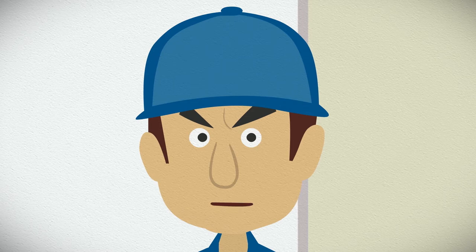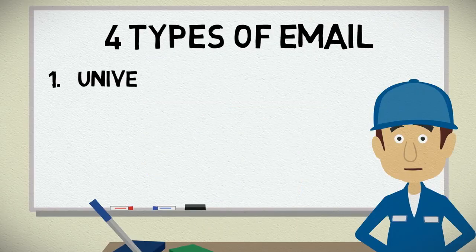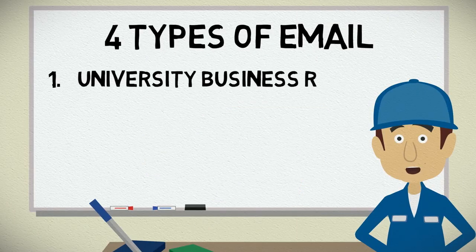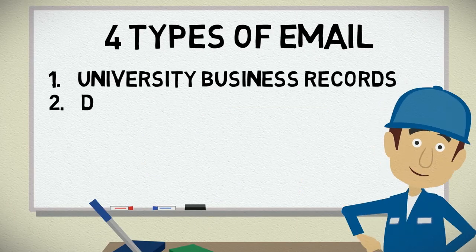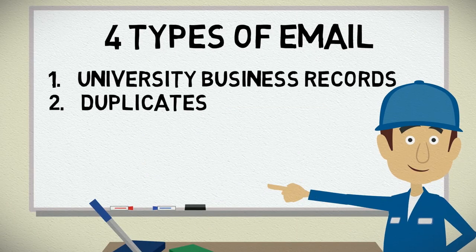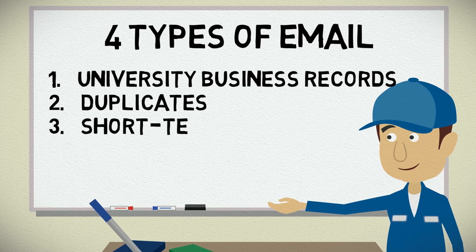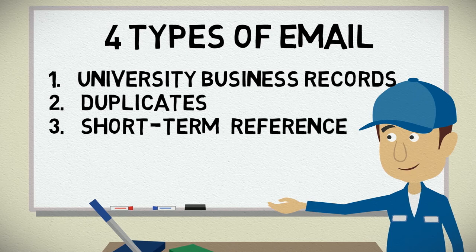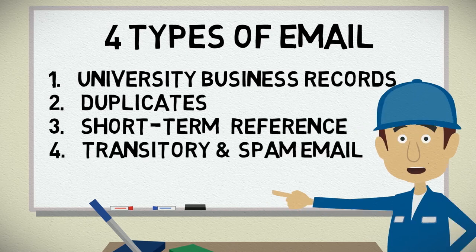I bet you never thought there were different types of email — but there are. 1. University business records. 2. Duplicates. 3. Short-term reference. 4. Transitory and spam email. Let's take a closer look at those categories using a couple of examples.